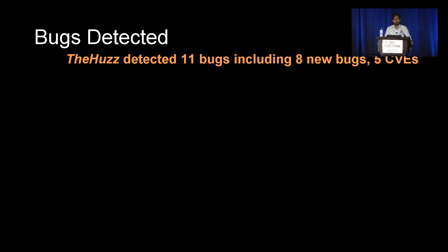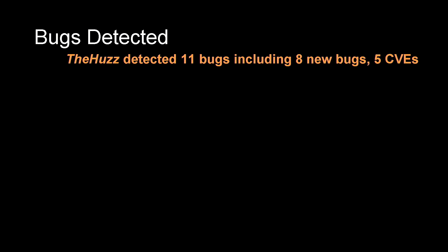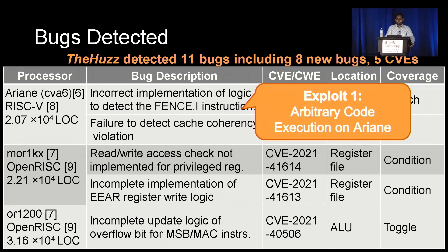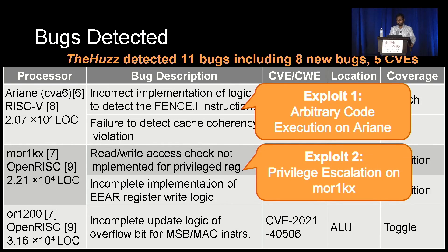We fuzzed four real-world open-source processors using DHS, from RISC-V and OpenRISC ISAs, which are commonly used benchmarks when evaluating hardware security tools. We found 11 bugs, including eight new ones that led to five CVEs. These include bugs in the decoder and cache controller logic of Ariane, privileged-related bugs in MOR1KX, and bugs in the ALU of OR1200. To demonstrate the software implications, we crafted two exploits that can be executed as user-level programs: exploit one performs arbitrary code execution by bypassing security checks on the Ariane processor, and exploit two performs privilege escalation on MOR1KX.